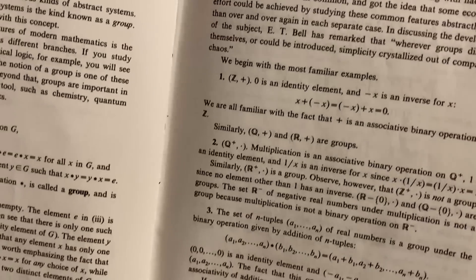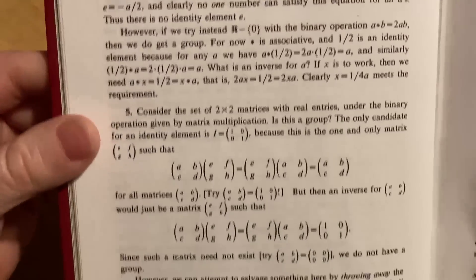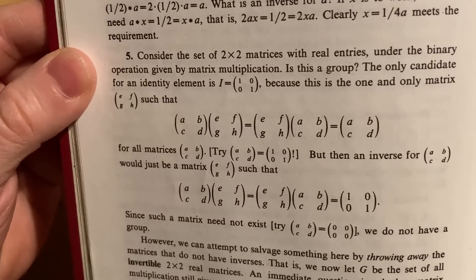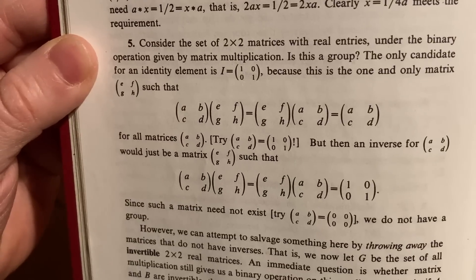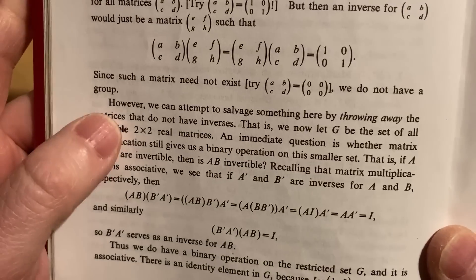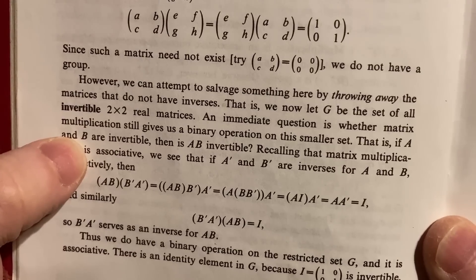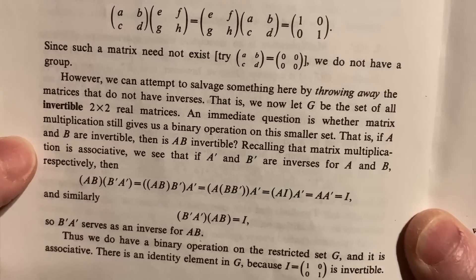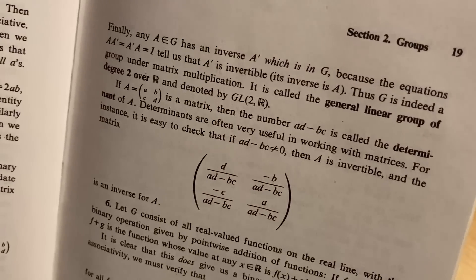Really nice mathematics in this book. And so this is like the intro section on groups. They have examples here of groups. Here's a set of matrices that form a group. Let's see. Consider the set of two by two matrices with real entries under the binary operation given by matrix multiplication. Is this a group? However, you have to get rid of matrices that don't have inverses because you need an inverse. So it says here, however, we can attempt to salvage something here by throwing away the matrices that do not have inverses. That's right. So you throw those away, and then you're left with that set of invertible matrices, and that will form a group because then every matrix has an inverse. That's a requirement in a group. Your elements have to have inverses.